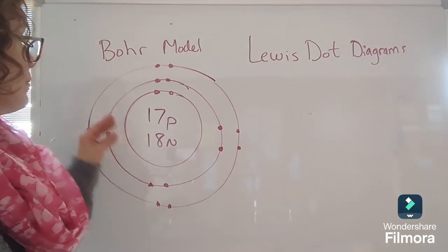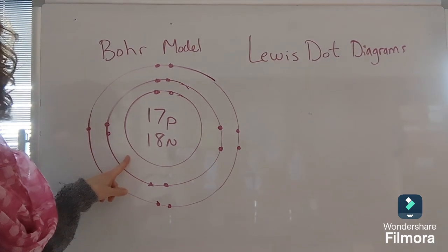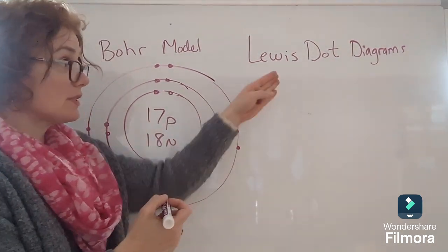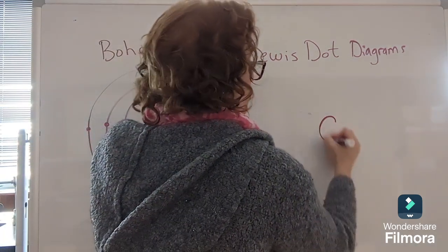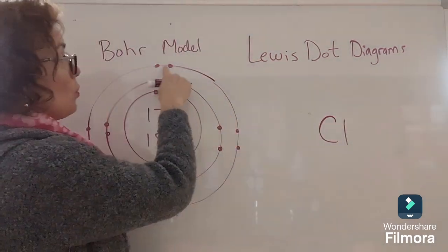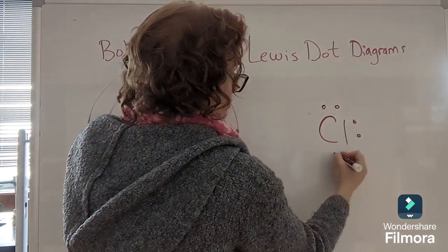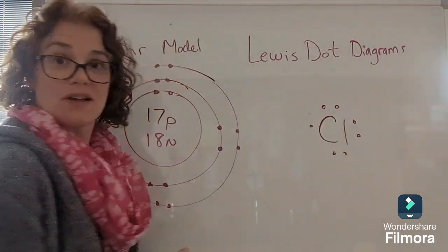Here's another example, a Bohr model of the element chlorine. And to draw the Lewis dot structure, or Lewis dot diagram of that, we would write the element symbol, and then only the valence electrons. So that's it.